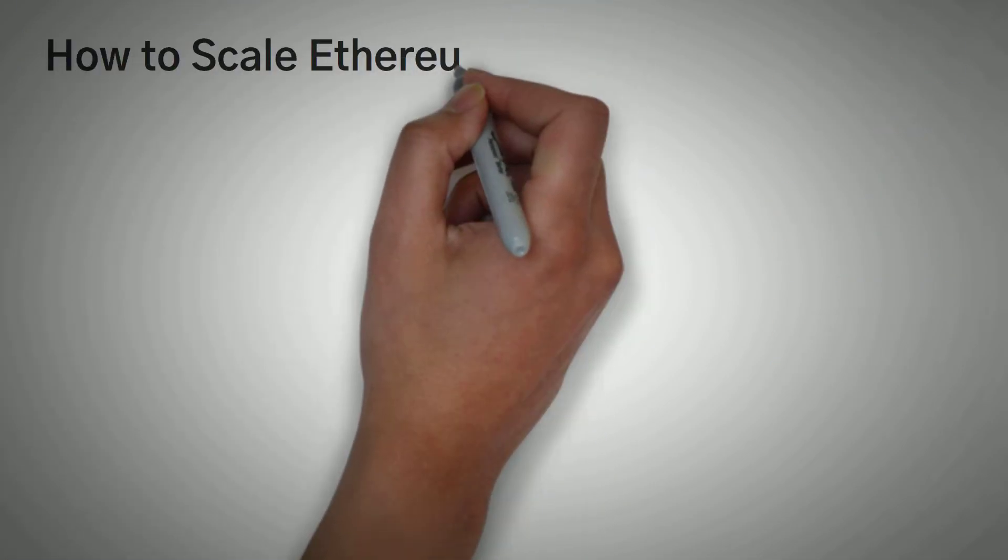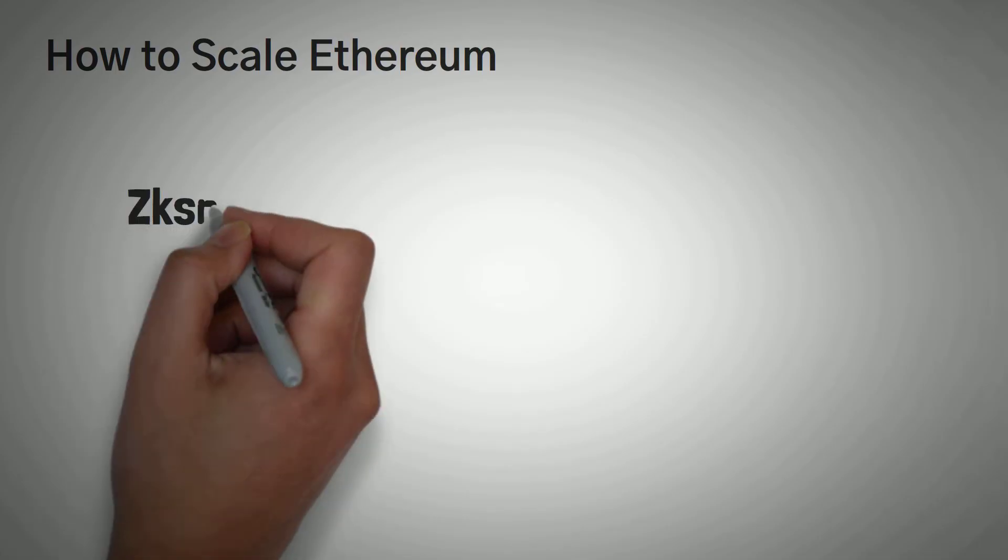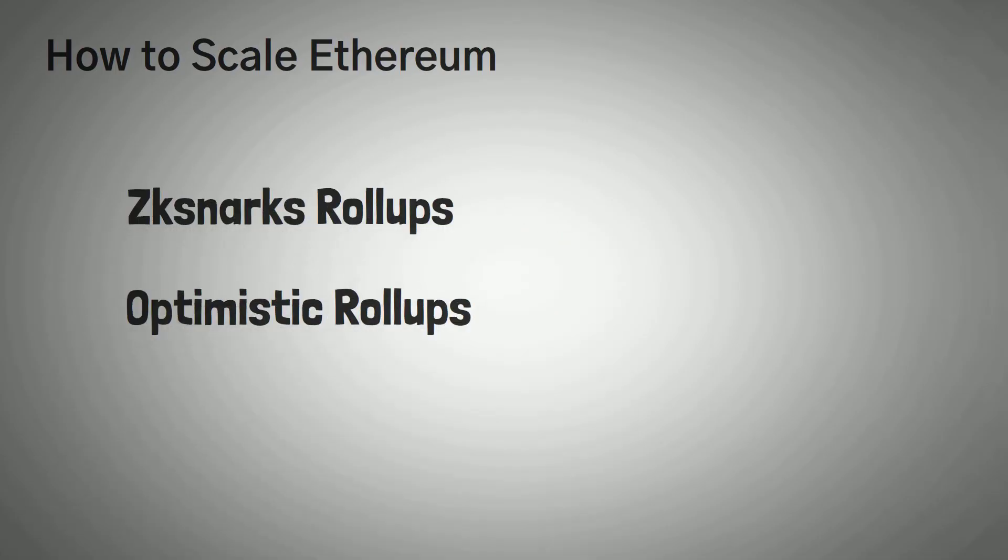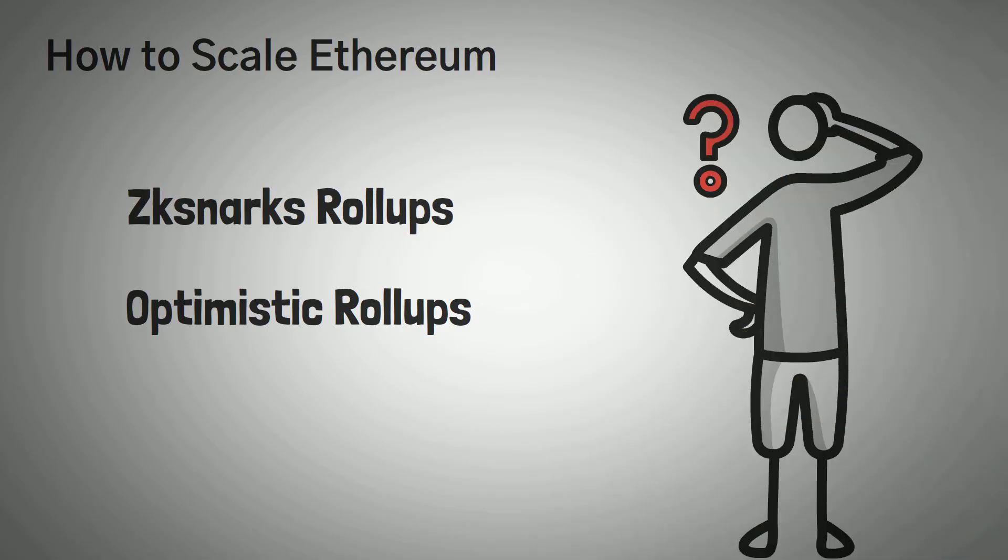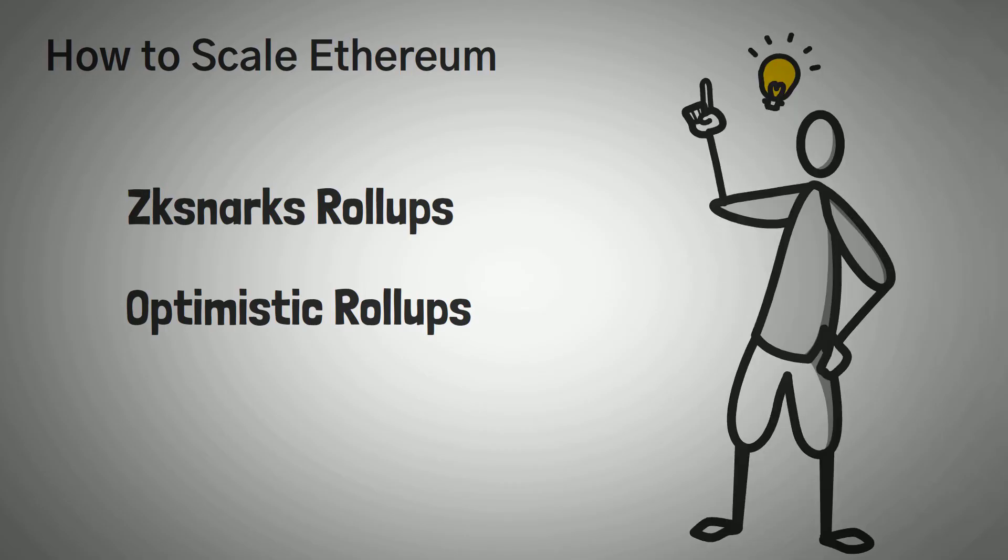Right now, there are actually two approved ways of doing this, and this is where it starts to get a little complicated. ZK snarks and optimistic rollups are words that we heard over and over when researching layer 2 scaling solutions. But now we do know what they are, and for the rest of this video, we are going to explain to you how each of them works.